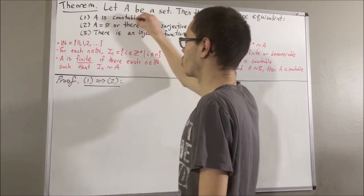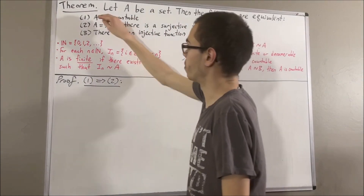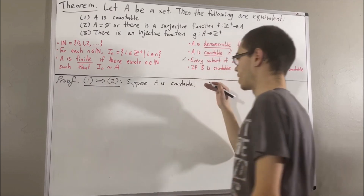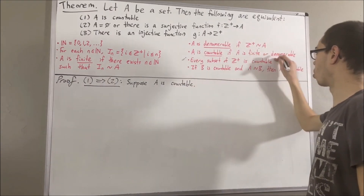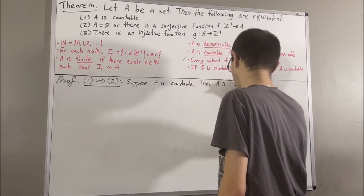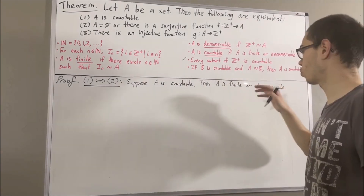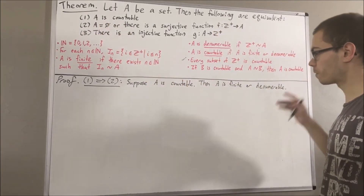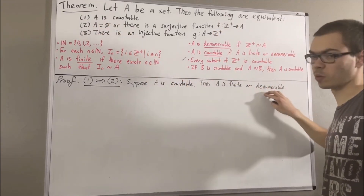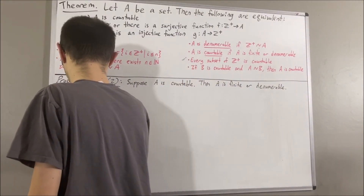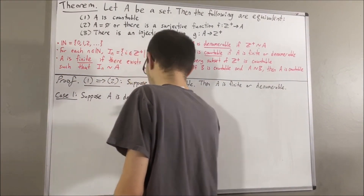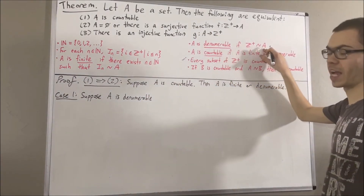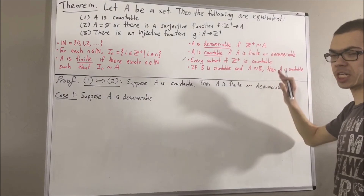To prove that, suppose 1 is true — in other words, suppose A is countable. By definition, we know that A is finite or denumerable, and we're going to show in either case that 2 is true. Let's first consider the case that A is denumerable. This means that there exists a bijection from the positive integers to A, and I'm going to call that bijection F.